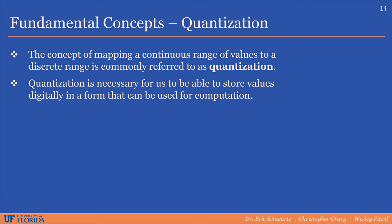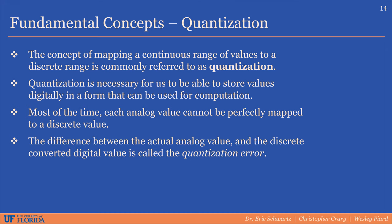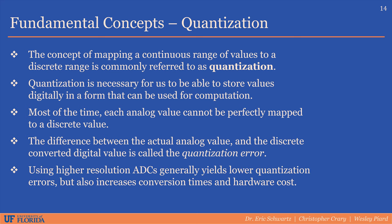The concept of mapping a continuous range of values such as voltages to a discrete range such as digital values is commonly referred to as quantization. Most of the time, each analog value cannot be perfectly mapped to a discrete digital value, and the difference between the actual value and the chosen discrete value is called the quantization error. This is comparable to measuring the caterpillar and choosing either 3 or 4 centimeters — our quantization error was the difference between 4 centimeters and the actual 3.7 centimeters. Higher resolution ADCs generally yield lower quantization errors but increase conversion times and hardware cost.